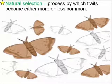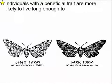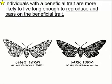Natural selection is a process by which traits can become either more or less common. For example, the dark colored moth becomes more common over time because the light colored moth was easier for predators to see. The individuals with the beneficial trait are more likely to live long enough to reproduce and pass on that beneficial trait. What doesn't happen is a light moth deciding to turn into a dark moth — that's not how it works.